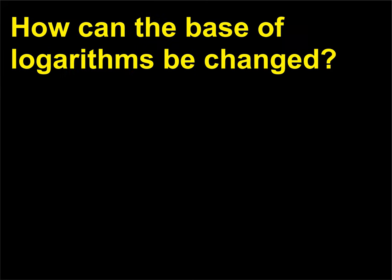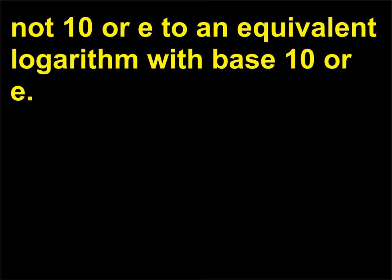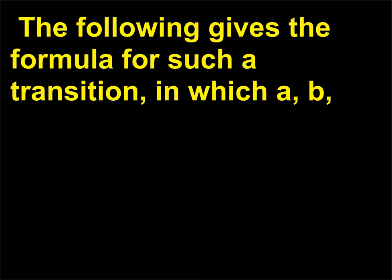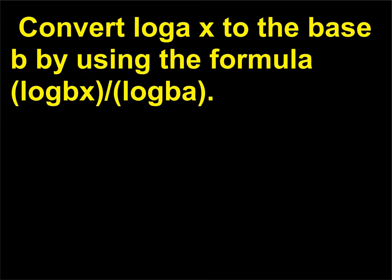How can the base of logarithms be changed? The base of logarithms can be changed from one that is not 10 or E to an equivalent logarithm with base 10 or E. The following gives the formula for such a transition, in which A, B, and X are real positive numbers, but neither A nor B are equal to 1, and X is greater than 0. Convert log_A(X) to base B by using the formula: log(X) / log_B(A).